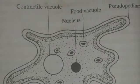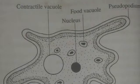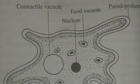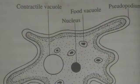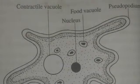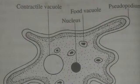Nutrition in amoeba is holozoic. Digestion involves food capture, ingestion, circulation, absorption, and ejection. Food capture and ejection are accomplished by the pseudopodia, accompanied by the formation of food vacuoles. Digestion is intracellular and takes place within the food vacuole by the action of enzymes discharged from the endoplasm. The digested food is circulated all over the body by cytoplasmic streaming, and the undigested residue is expelled by ejection.